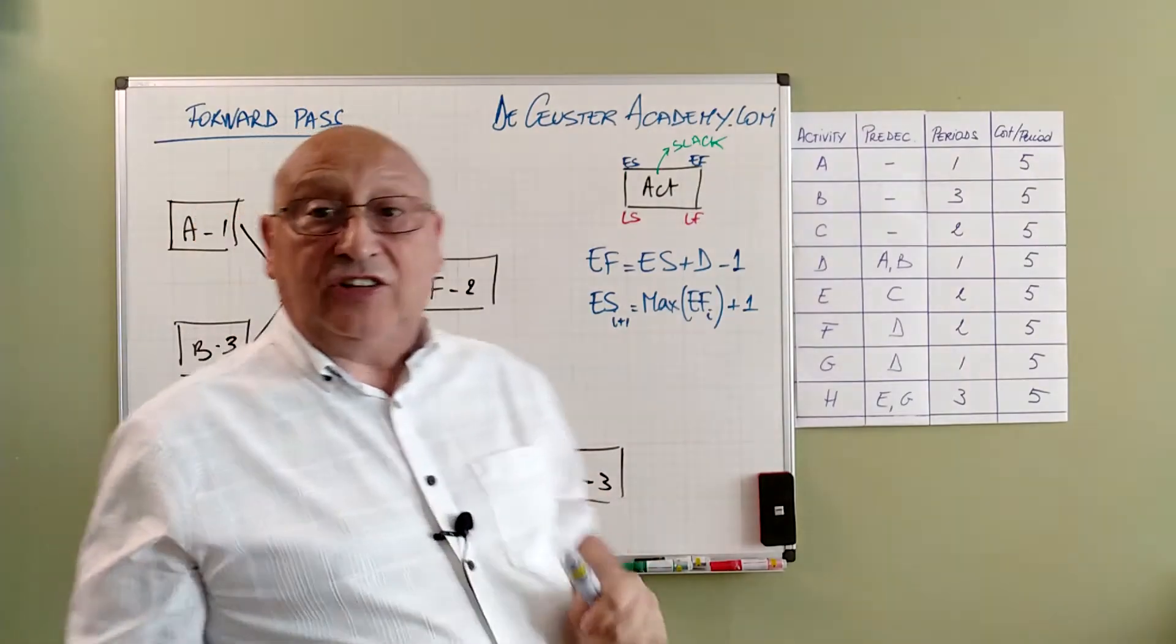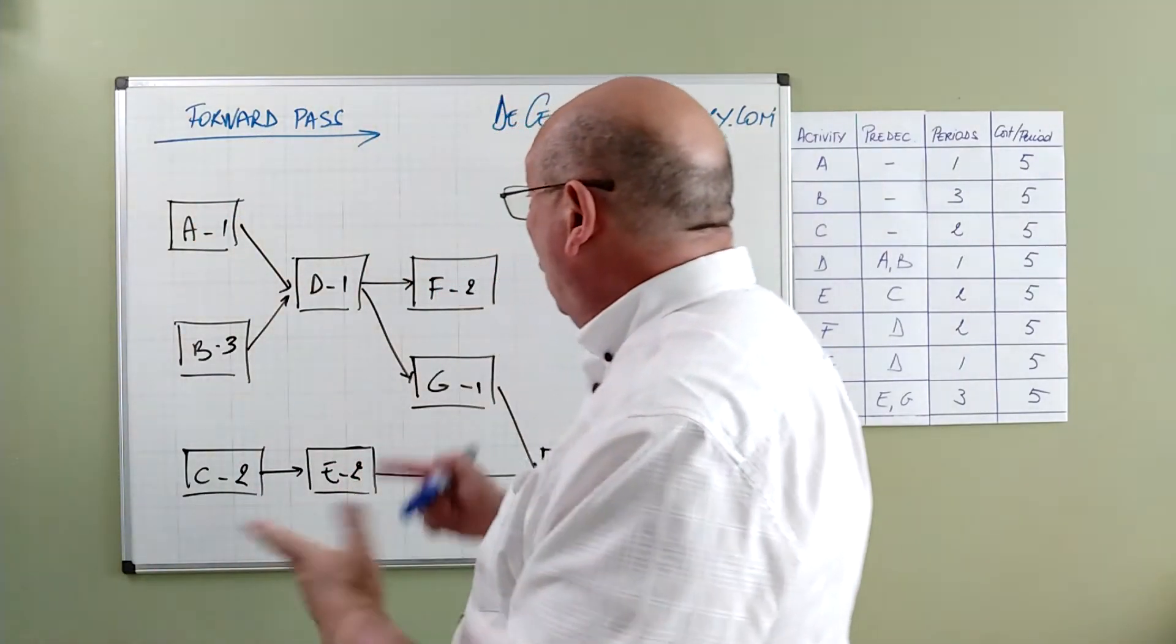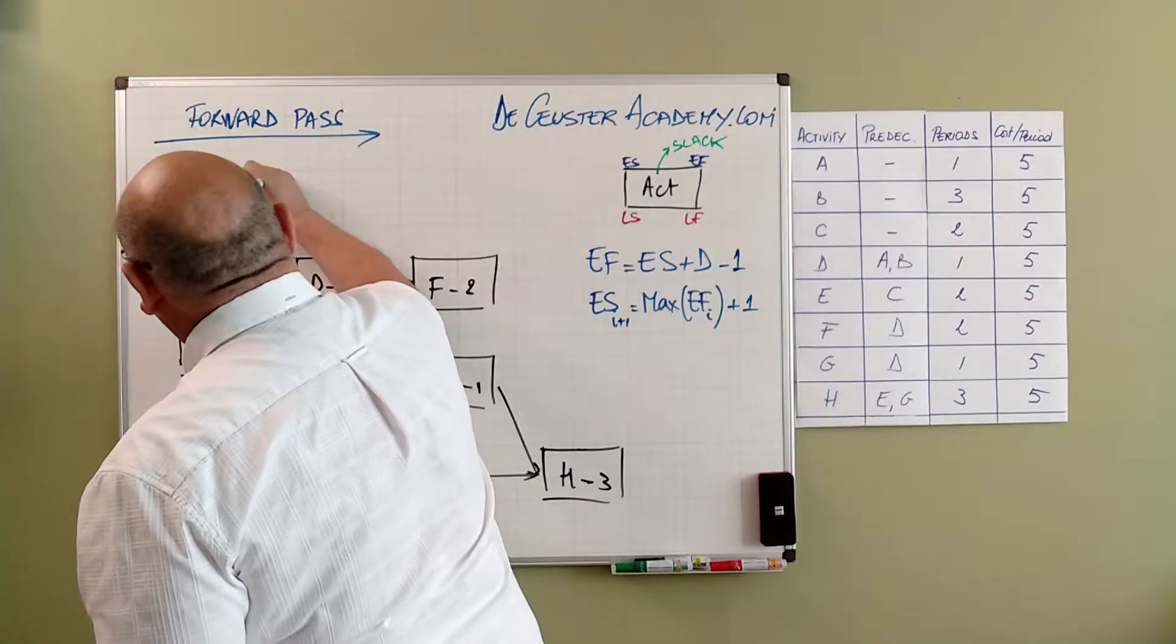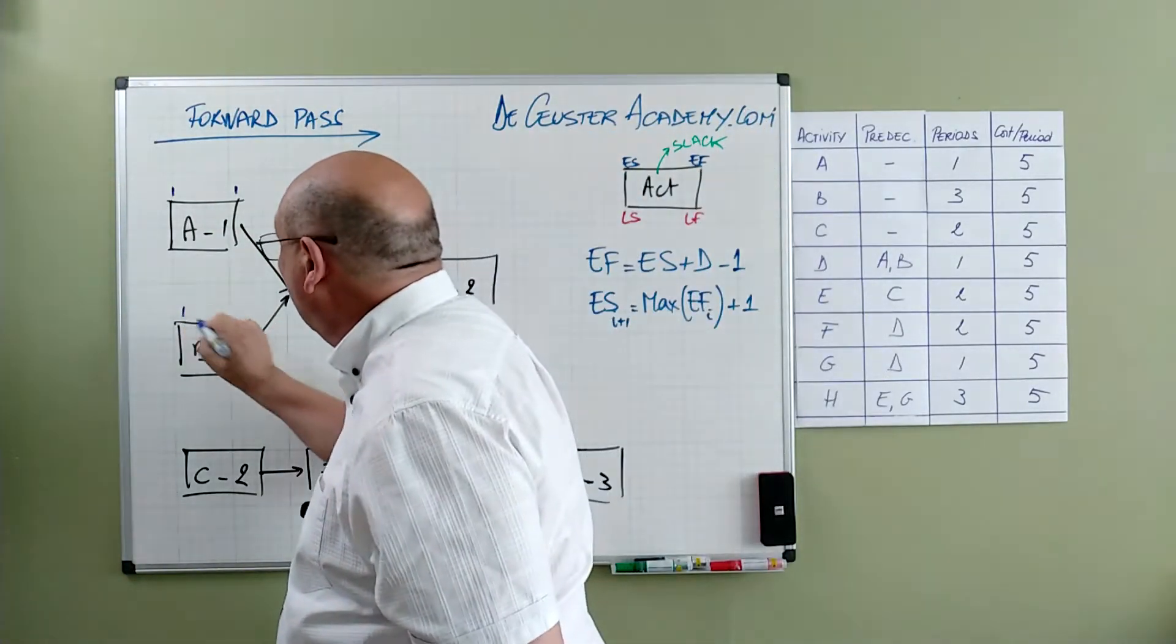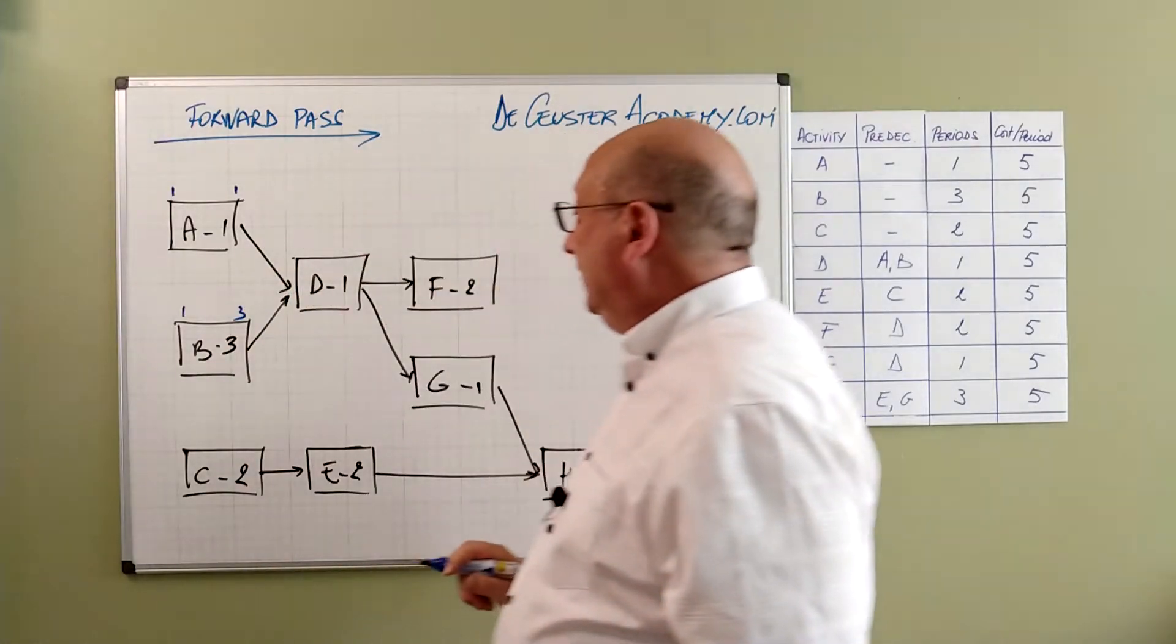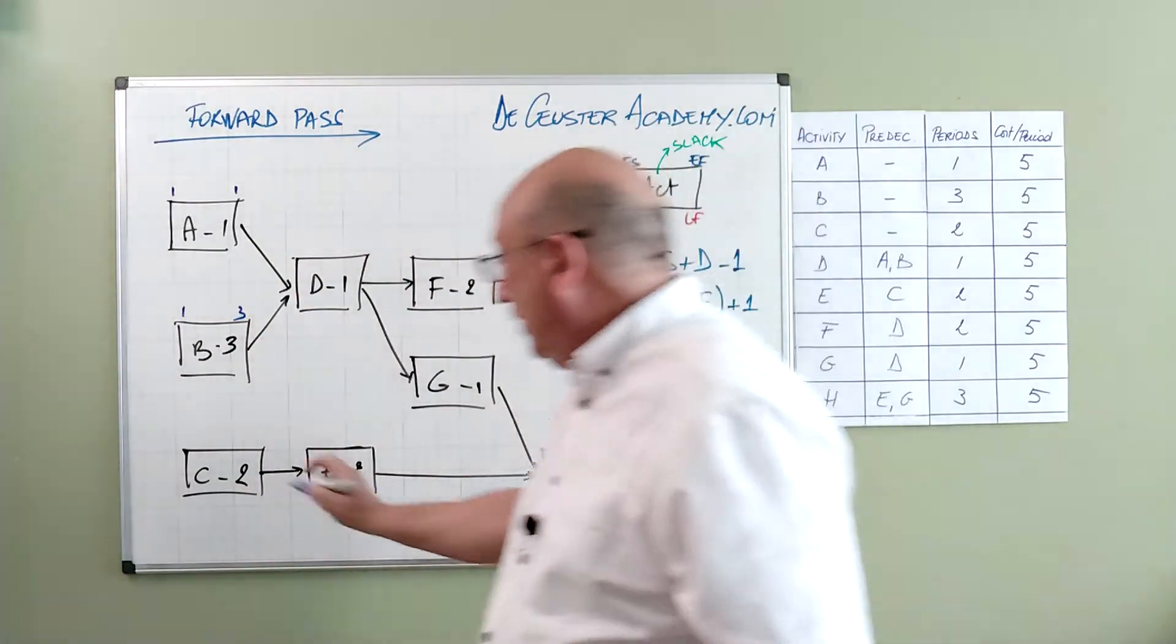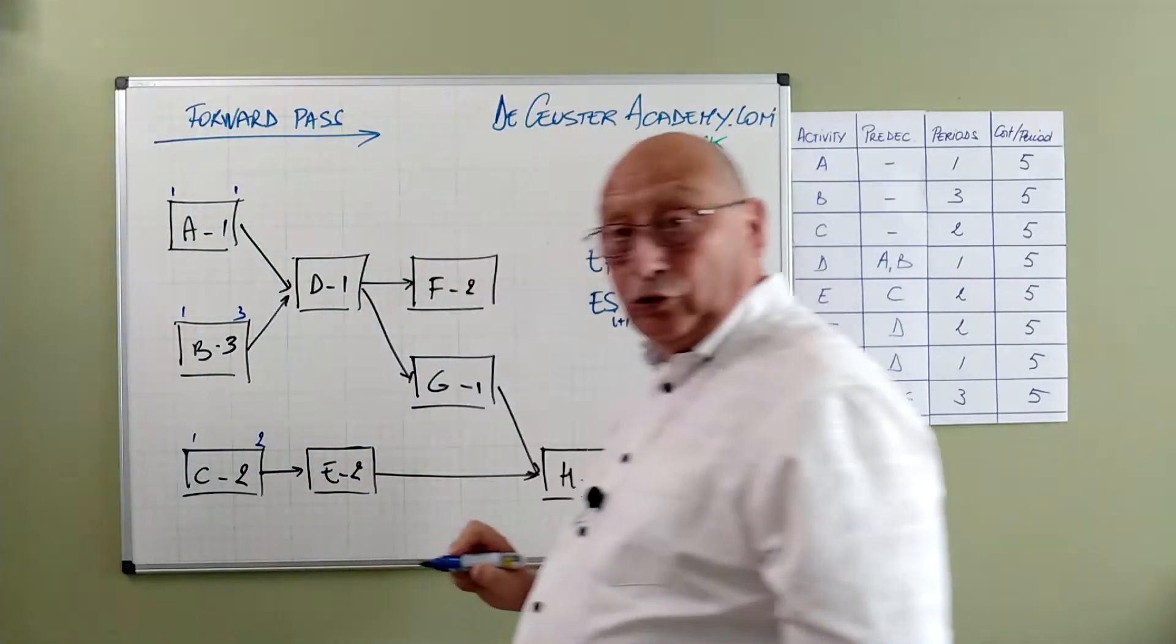Let's have a look at this calculation. First of all A, A plus 1 minus 1 is 1. B, 1 plus 3 minus 1 is 3. And for C I have 1 plus 2 minus 1 is 2.